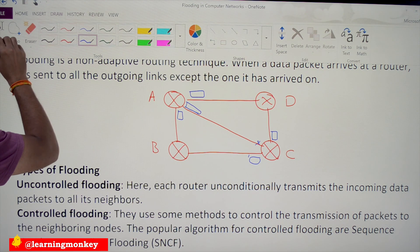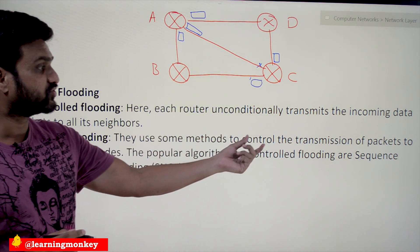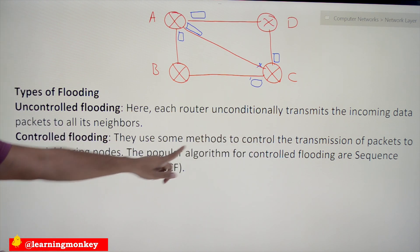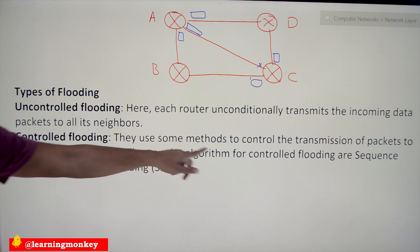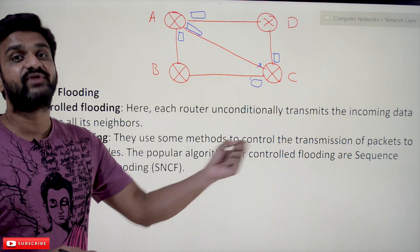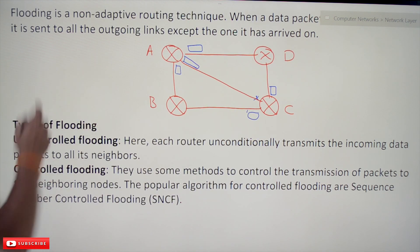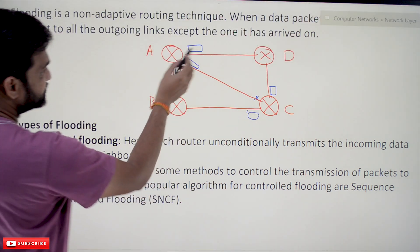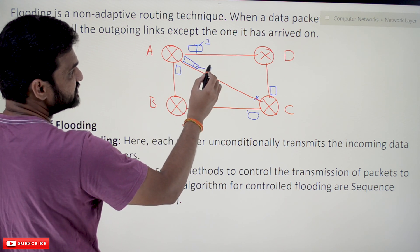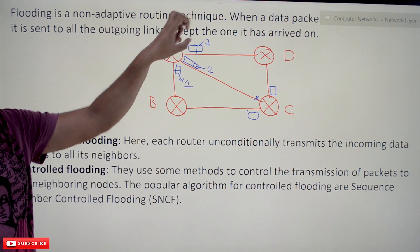The next type is controlled flooding. Controlled flooding uses some methods to control the transmission of packets. The popular algorithm for controlled flooding is Sequence Number Controlled Flooding, or SNCF. Using this technique, the flooding can be controlled. Every packet being transmitted has a sequence number — for example, the first packet transmitted uses sequence number one. This sequence number is stored in the header part of the packet.